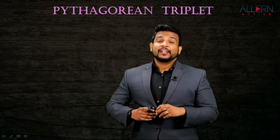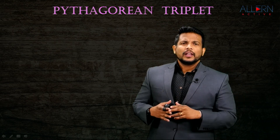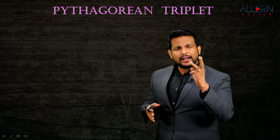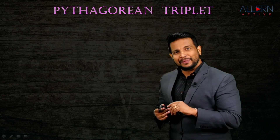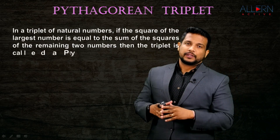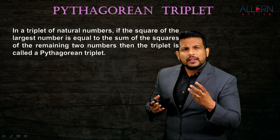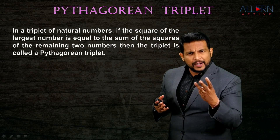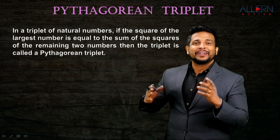Let's learn something else that came from Pythagoras theorem - it is called a Pythagorean triplet. When you say triplet, it is nothing but three. But what is a Pythagorean triplet? We are talking about a triplet of natural numbers, and we need to understand when a triplet of natural numbers is called a Pythagorean triplet.